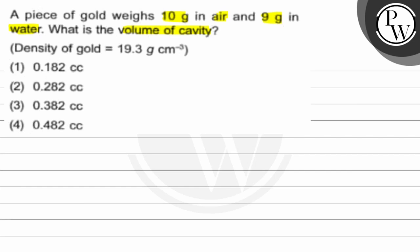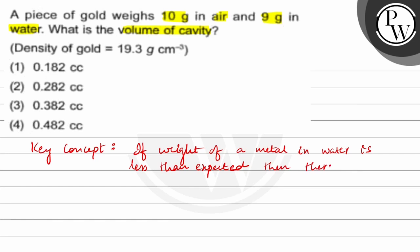Density of gold is 19.3 grams per centimeter cube. The key concept is: if the weight of a metal in water is less than expected, then there is a cavity present inside the metal.